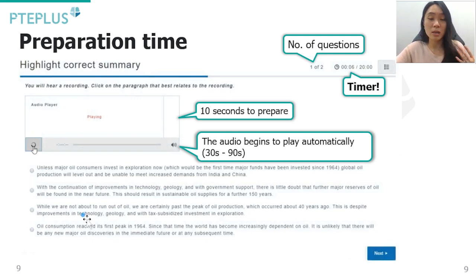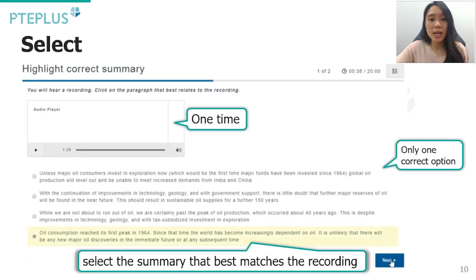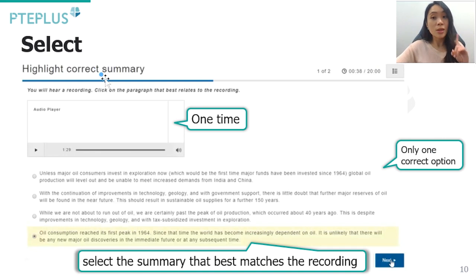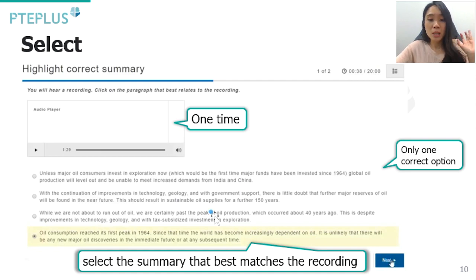You'll typically see four summary options, though there can be three or up to five or six depending on the question. Once the audio finishes, select the summary that best matches or describes the recording — remember it only plays once, so apply your listening skills carefully. There is only one correct summary. Stick to the recommended time, select the option you think is best, and move on even if you're unsure.